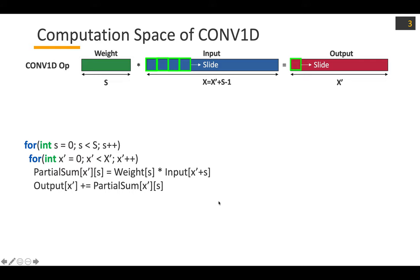We can represent this operation in a loop nest, which is relatively simple. It has two loop iterators that correspond to the weight index S and output index X prime. The partial sum represents the element-wise multiplication for each output — X prime represents the output index and S represents the weight index. We accumulate all the partial sums to generate the final output.